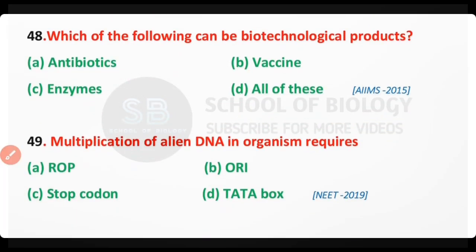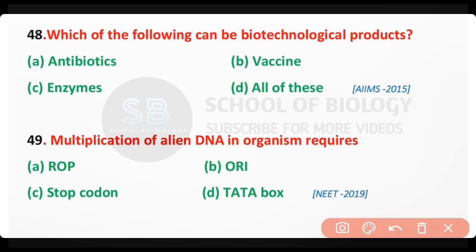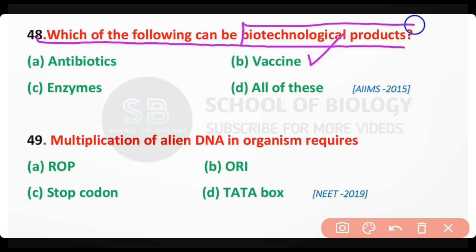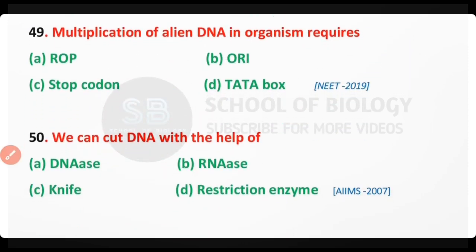Question number 48. Which of the following can be a biotechnology product — antibiotics, vaccine, enzymes, or all of these? The correct answer is option B. Vaccine is a biotechnology product.